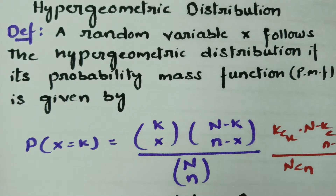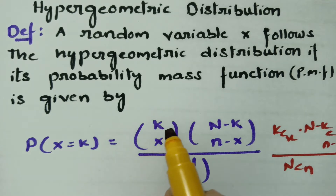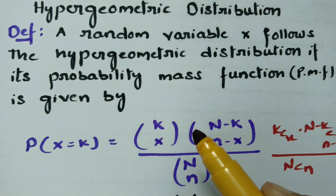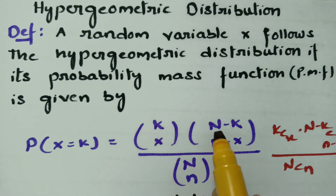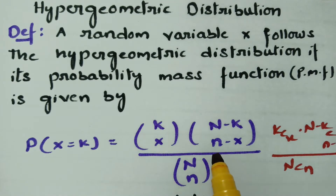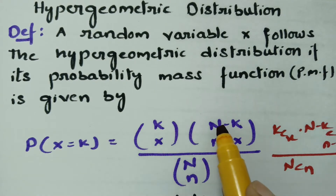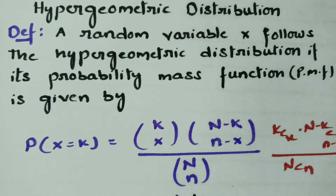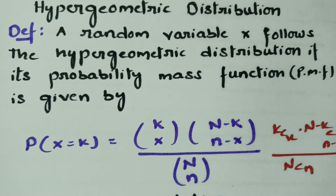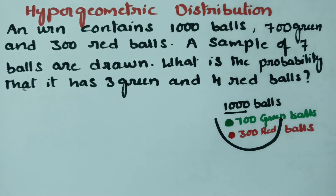The formula is straightforward: K is the total number of successes, N is the total population, n is the sample size. We subtract K and x from N and n respectively, giving us (N-K) and (n-x). This is how we can represent the formula easily. Now here is an important problem to solve.